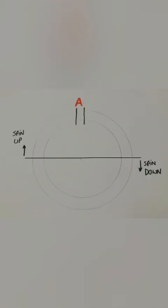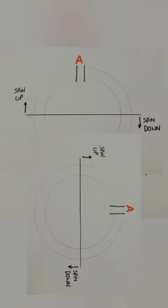If we look at spin sensor A, for example, I'm going to use this schematic. Anything above the black line is spin up; anything below the black line is spin down. If machine 1 and machine 2 are both set to A, they will both record the opposite spin 100% of the time — so if sensor A is spin up in the first machine, it'll be spin down in the second machine, and vice versa.